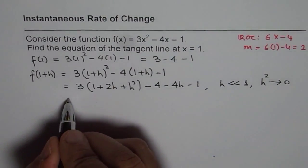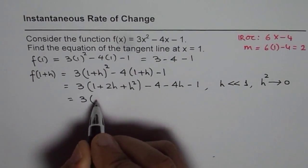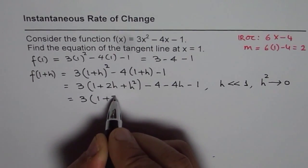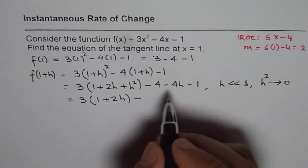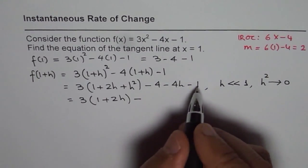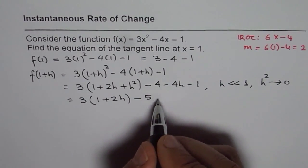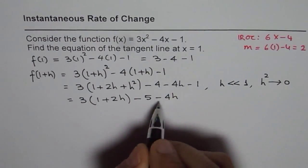This is approaching 0. Therefore, we can write this as 3(1 + 2h) - 4 - 1 is -5 and we have -4h here. This is how we can kind of reduce it.